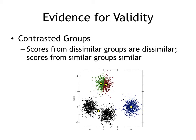This evidence for validity — based on group differences — is not very common. What it means is that scores from different groups are different, and scores from similar groups are similar. So if you give a test to third graders and to sixth graders, you would expect their scores to be very different because they are different groups. And if you give the test to many third graders, similar groups should produce similar scores.